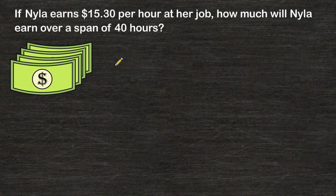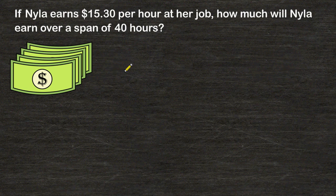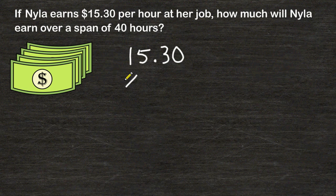If Nyla earns $15.30 per hour at her job, how much will Nyla earn over a span of 40 hours? To figure out how much Nyla will earn over a time span of 40 hours, what we have to do is take her hourly rate, which is $15.30, and multiply it by the number of hours worked. So we have to multiply $15.30 by 40.